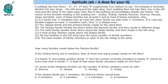Hello everyone, welcome to Aptitude Jab. This is a set based on arrangement. There are four floors in a building: first, second, third, and fourth from bottom to top. The building is divided into two wings: left wing and right wing.